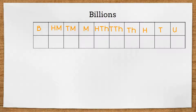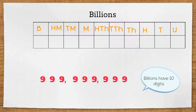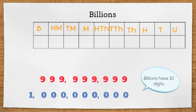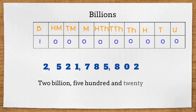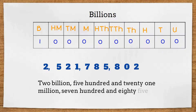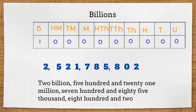The next column on our place value chart is the billions column. Billions are ten digits long. We would have counted nine hundred and ninety-nine million nine hundred and ninety-nine thousand nine hundred and ninety-nine before reaching a billion. A number like two five two one seven eight five eight zero two will be read as two billion five hundred and twenty-one million seven hundred and eighty-five thousand eight hundred and two.